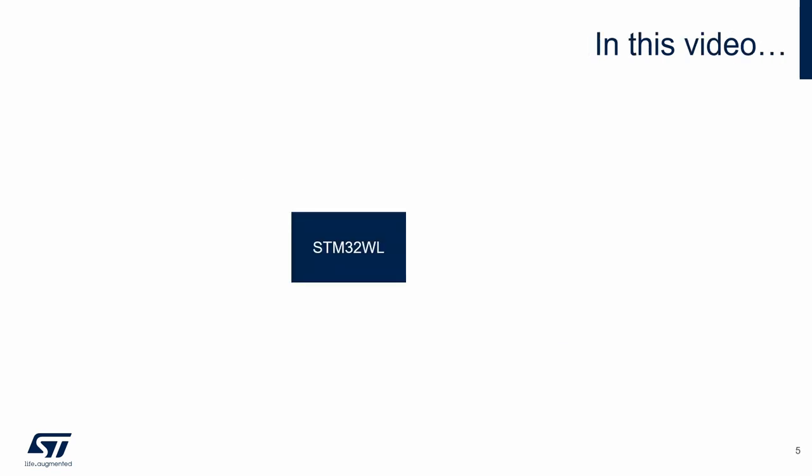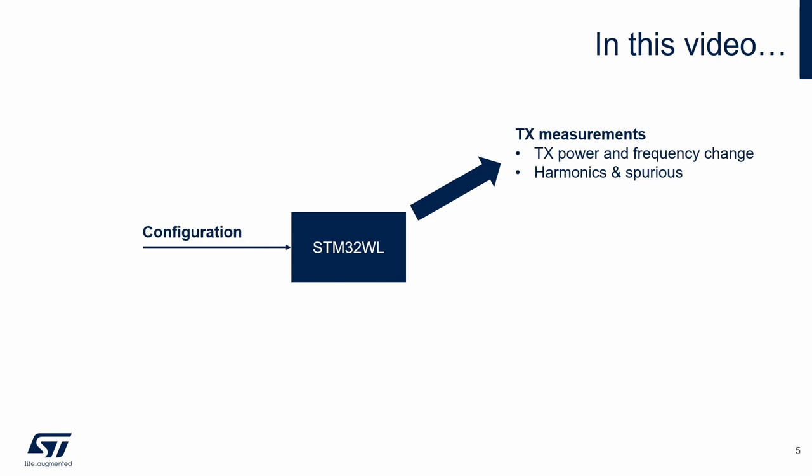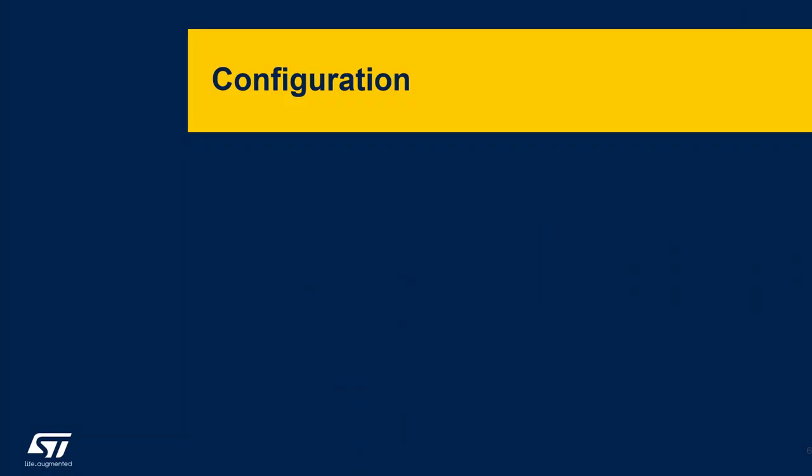In this video, we will focus on how to configure the STM32WL for RF measurements. Then we will show how to set basic transmitter parameters like frequency or output power. Based on this knowledge, we will demonstrate basic carrier and spectrum measurements. The last part is about receiver measurement, focusing on sensitivity. The aim of this video is to show the main idea, and the presented concepts can be used in other RF measurements with the STM32WL.